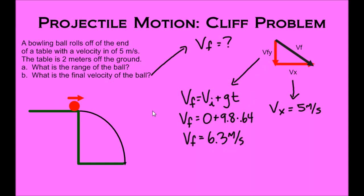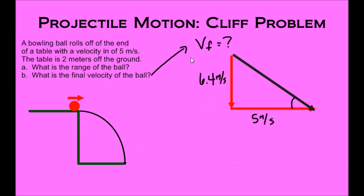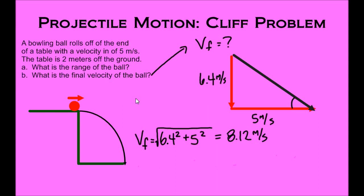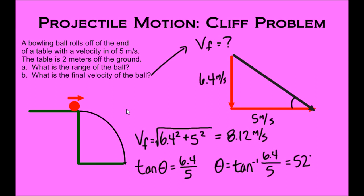Our components are now 6.4 meters per second for VFy and 5 meters per second for Vx. Using the Pythagorean theorem: 6.4² + 5² = VF², giving us VF = 8.12 meters per second. Then, to find the angle — because every velocity is a vector quantity requiring magnitude and direction — we use the tangent: tan(θ) = 6.4 / 5. The angle is the inverse tangent of 6.4 divided by 5, which gives us 52 degrees. So the final velocity is 8.12 meters per second at an angle of 52 degrees.